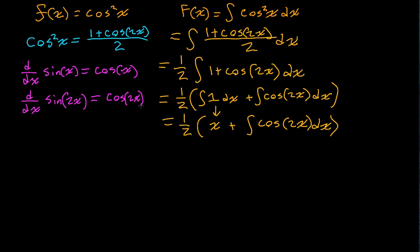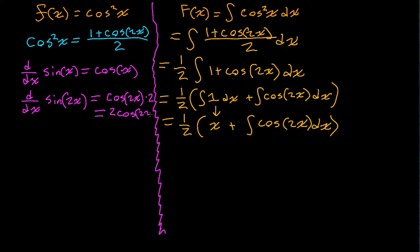And then we multiply that times the derivative of the inner function with respect to x, which is 2. So we have that the derivative of sine of 2x is going to be 2 cosine of 2x.